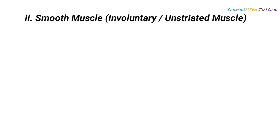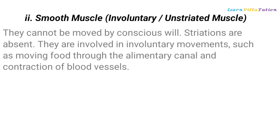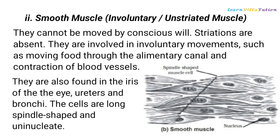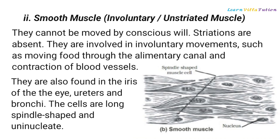Smooth Muscle, also called Involuntary or Unstriated Muscle, cannot be moved by conscious will and striations are absent. They are involved in involuntary movements such as moving food through the alimentary canal and contraction of blood vessels. They are also found in the iris of the eye, ureters, and bronchi. The cells are long, spindle-shaped, and uninucleate.